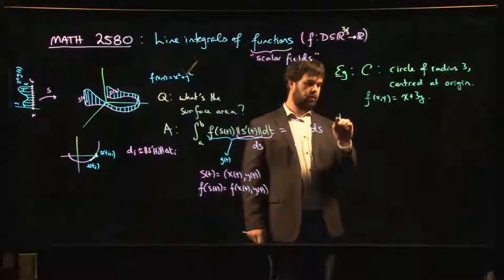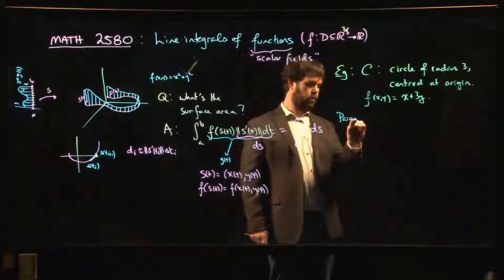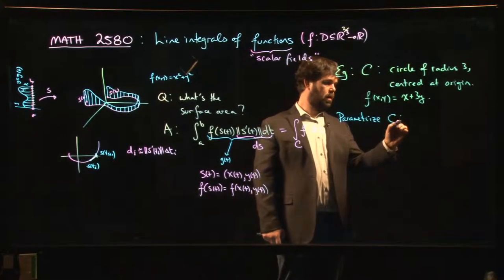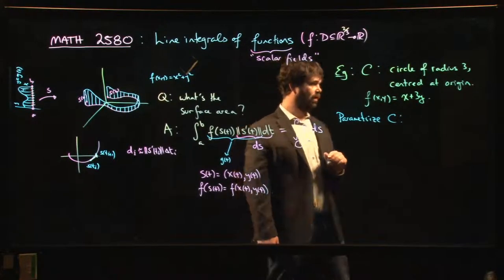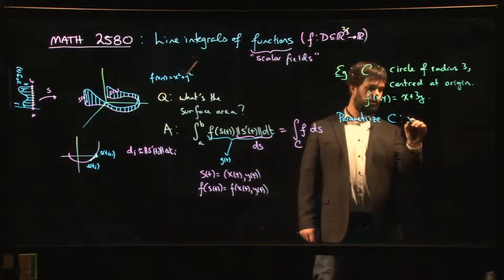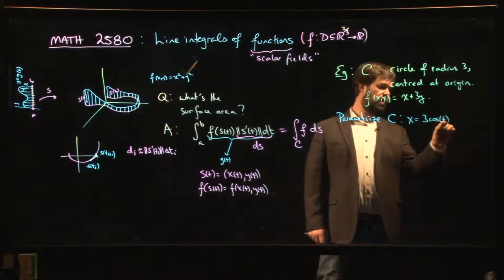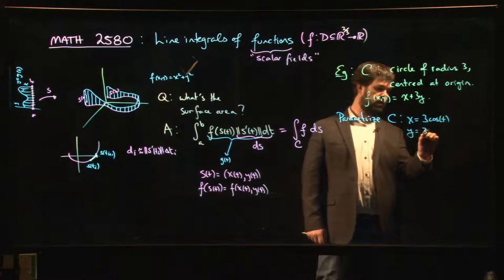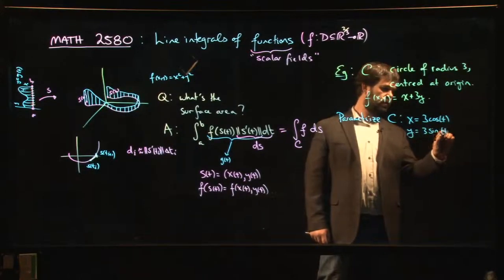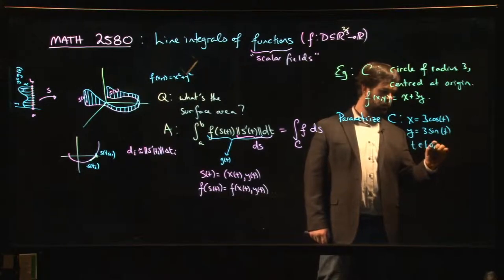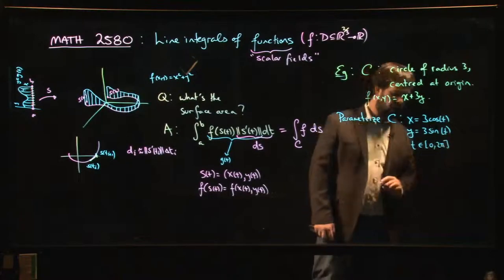we've got to parameterize the curve. Fortunately, there's a standard parameterization for a circle centered at the origin. We can take x to be 3cos(t), y to be 3sin(t), with t between 0 and 2π.